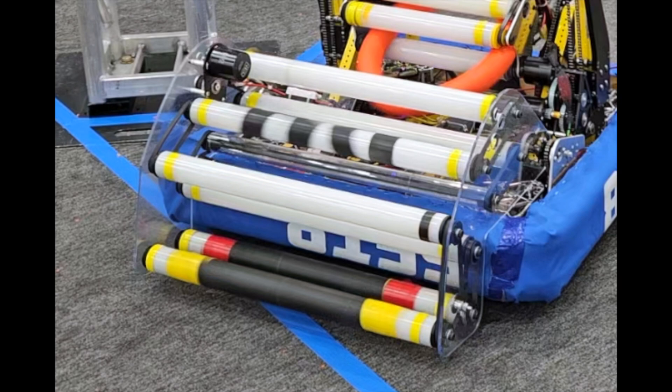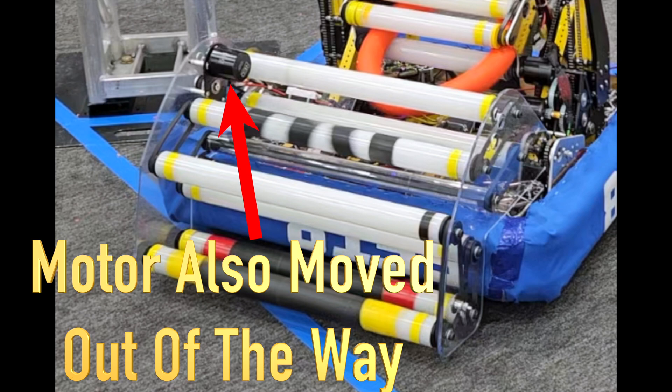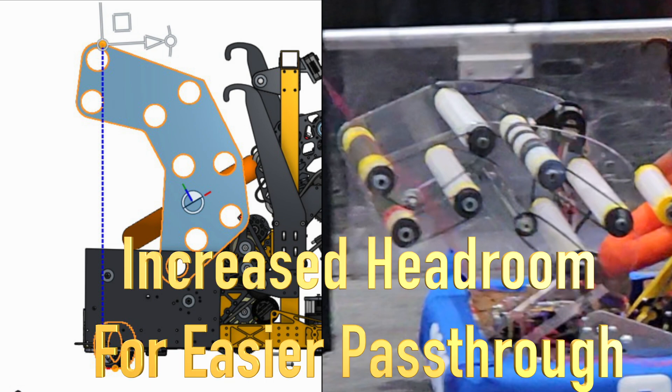Third, we moved the pulleys transmitting power to all rollers to the outer side of the mechanism, preventing nodes from getting stuck inside. Fourth, we replaced some rollers with smaller ones, making it easier for nodes to travel through.